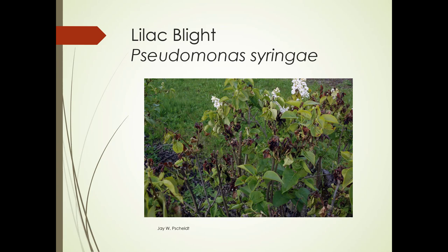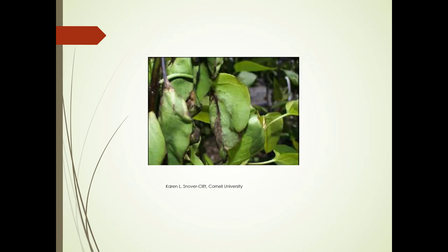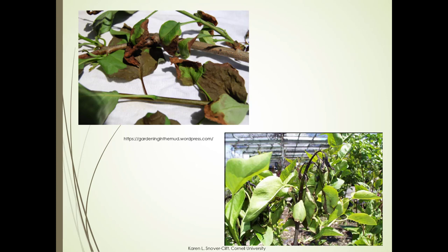Lilac blight — you may start to see this. Caused by Pseudomonas syringae, and don't let it fool you — this disease affects more than just lilacs. The tips are all black. It starts as brown spots on stems and leaves of young shoots, which may have a yellow halo, then become black and grow rapidly. Here's some advanced damage, and you can see a shepherd's crook shape — that's one indicator of Pseudomonas.